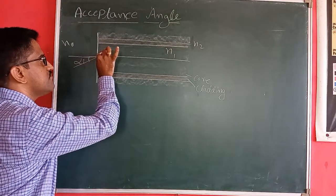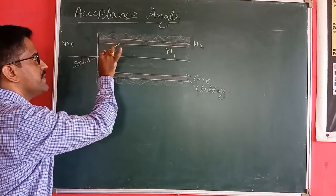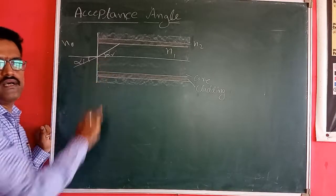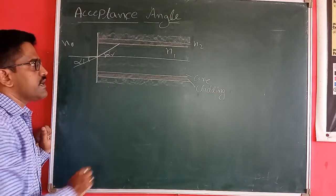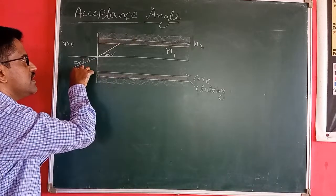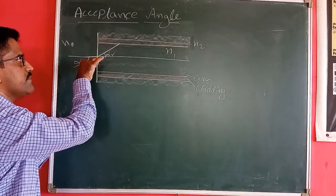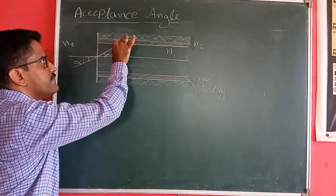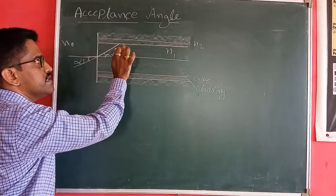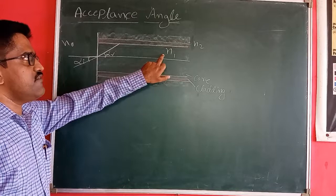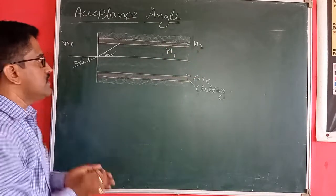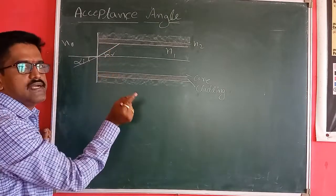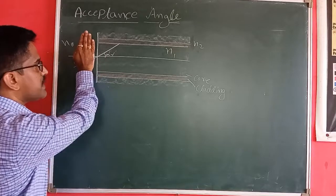If the light ray is incident at some incident angle alpha_i, then the light ray will enter into this fiber making an angle alpha_r, where alpha_r is the refraction angle. The refractive index of the core is N1 and N2 is the refractive index of the cladding. This light ray will act as an incident ray as it passes through the core.